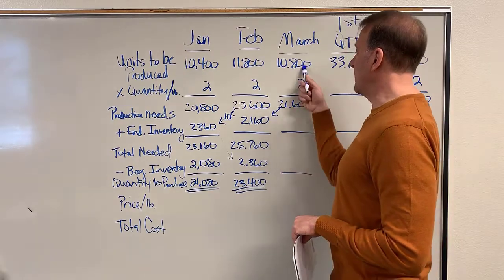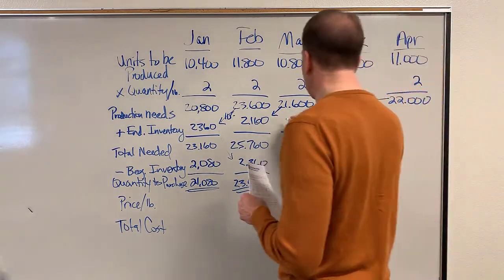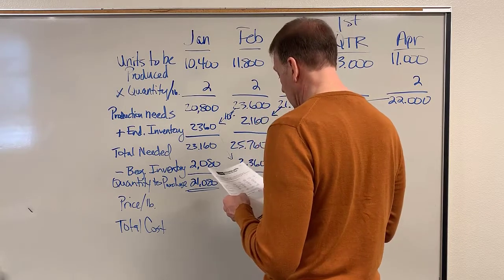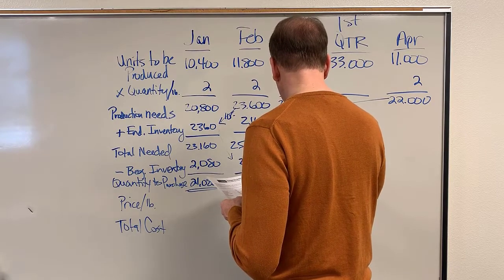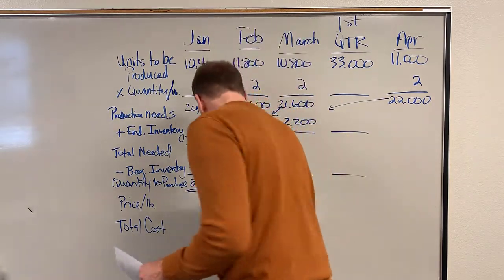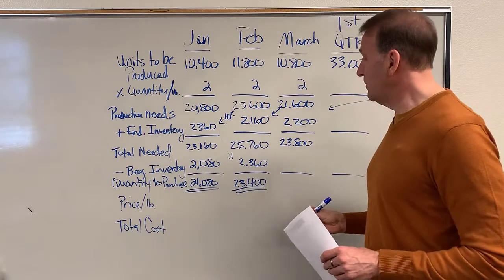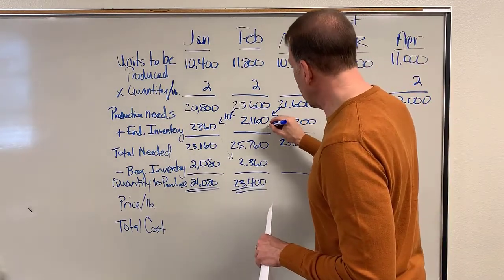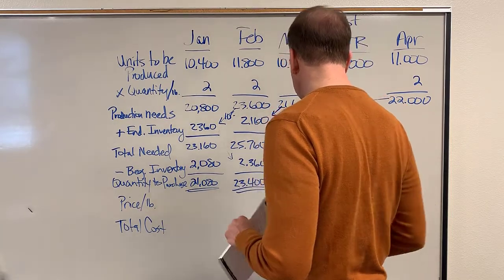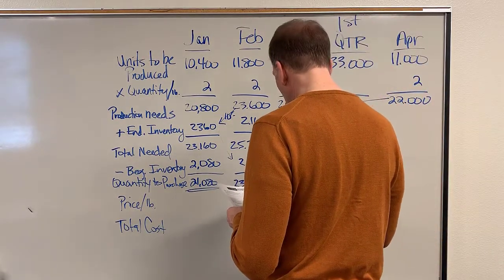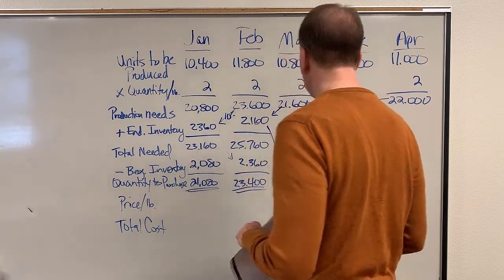For March: 10,800 times two gives us 21,600. Our 10% ending inventory comes from April's number — 10% of 22,000 gives us 2,200. So that gets us 23,800 total. Our beginning inventory comes from February's ending inventory, which is 2,160. So when we subtract that out, we get 21,640 pounds for March.